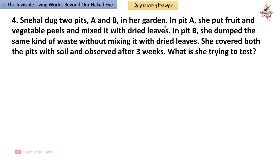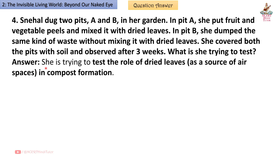Question 4: Snehal dug two pits A and B in her garden. In pit A she put fruit and vegetable peels mixed with dried leaves. In pit B she dumped the same kind of waste without mixing it with dried leaves. She covered both pits with soil and observed after three weeks. What is she trying to test?